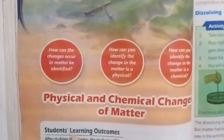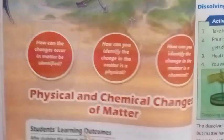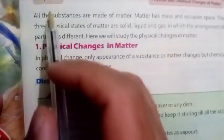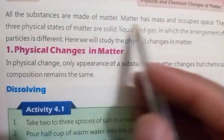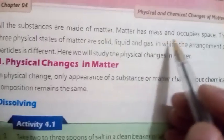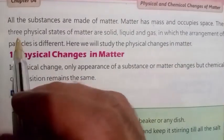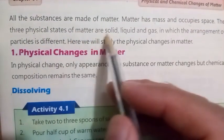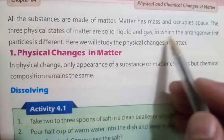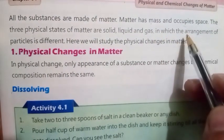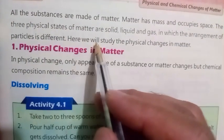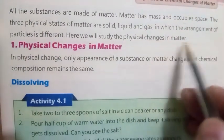Bismillahirrahmanirrahim. Chapter number four: Physical and Chemical Changes of Matter. All substances are made of matter. Matter has mass and occupies space. The three physical states of matter are solid, liquid, and gas, in which the arrangement of particles is different. Here we will study the physical changes in matter.